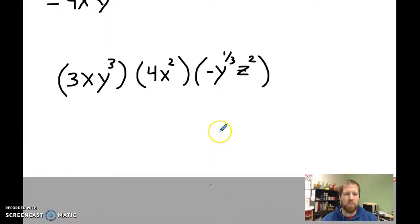Here's another one that's a little more complicated. We've got three monomials we're multiplying now. So we've got 3xy to the third, 4x squared, a negative y to the one-third, and z squared. Now, for this one, there's a couple things about this that are different that you should notice. The first is this negative y.